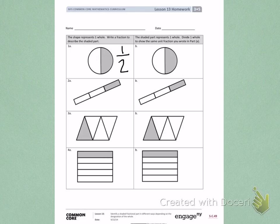Now in column B, it tells me the shaded part represents one hole. So instead of the circle being one hole, only this portion is one hole. Divide one hole to show the same unit fraction you wrote in part A. So in part A, I wrote a fraction to show it was one half. Right now, my one hole in part B is one hole, so I need to partition it into two equal parts. Now I have one half that is shaded.